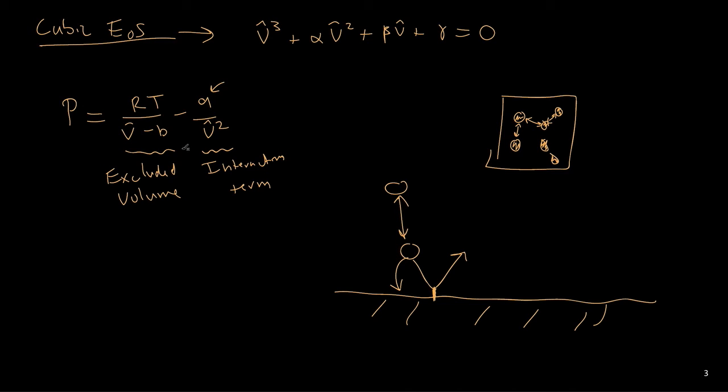If we have some attraction between the particles, that may affect how strongly the particles impact the wall, ultimately impacting the pressure overall. So the question we have now is, how do we get A and B for a large number of different compounds?